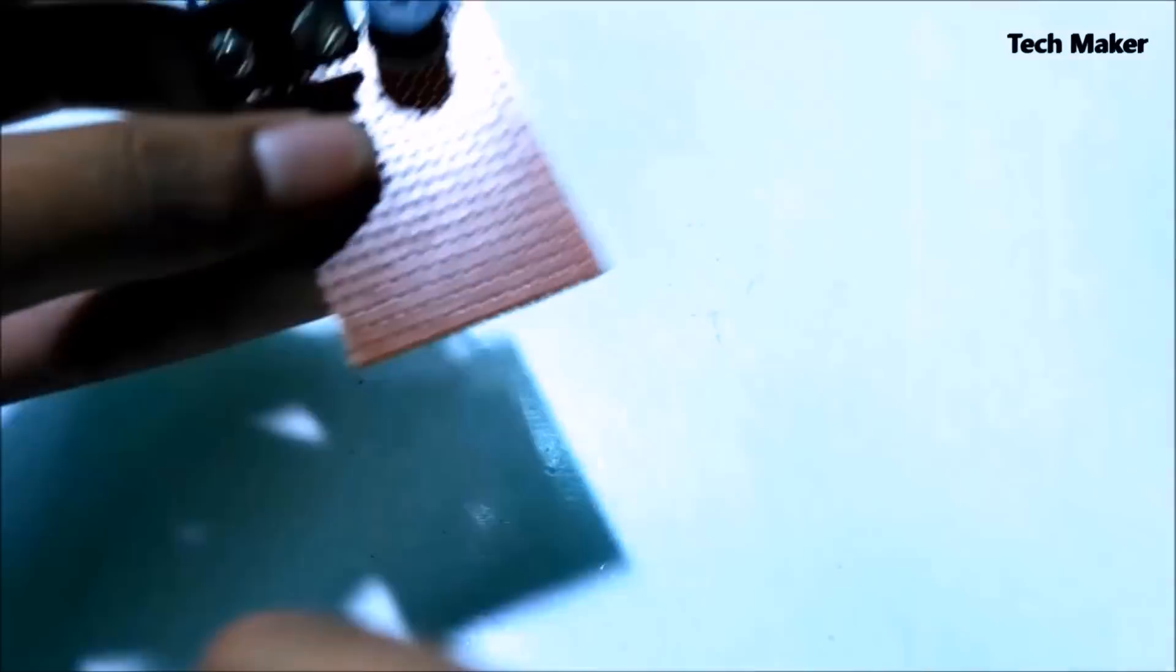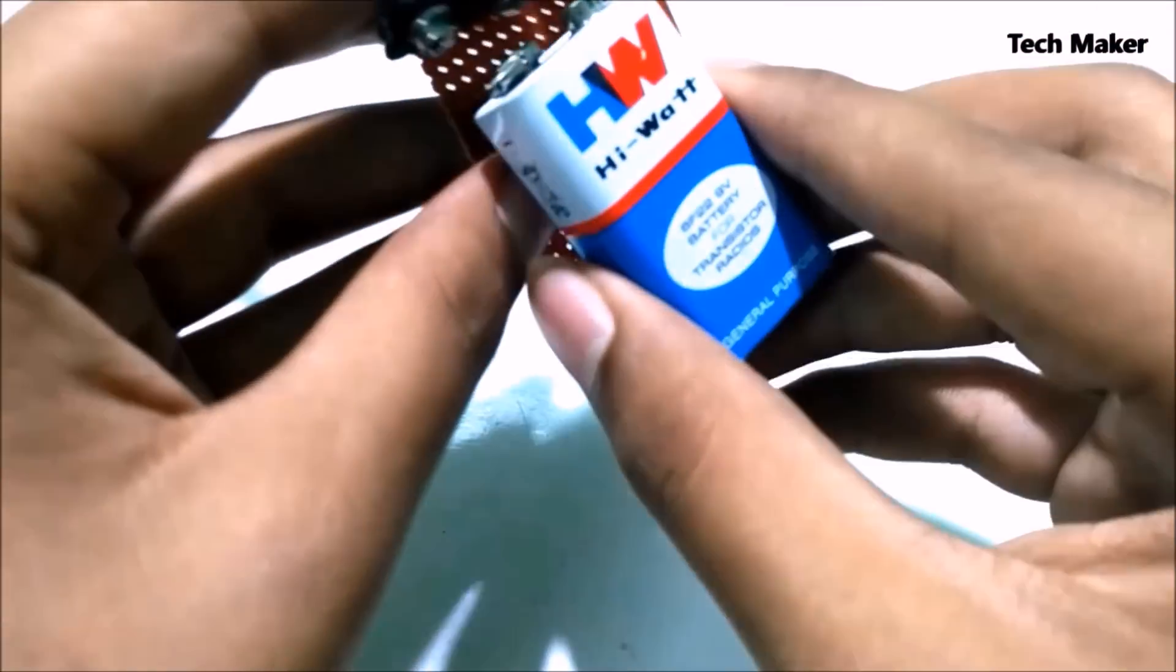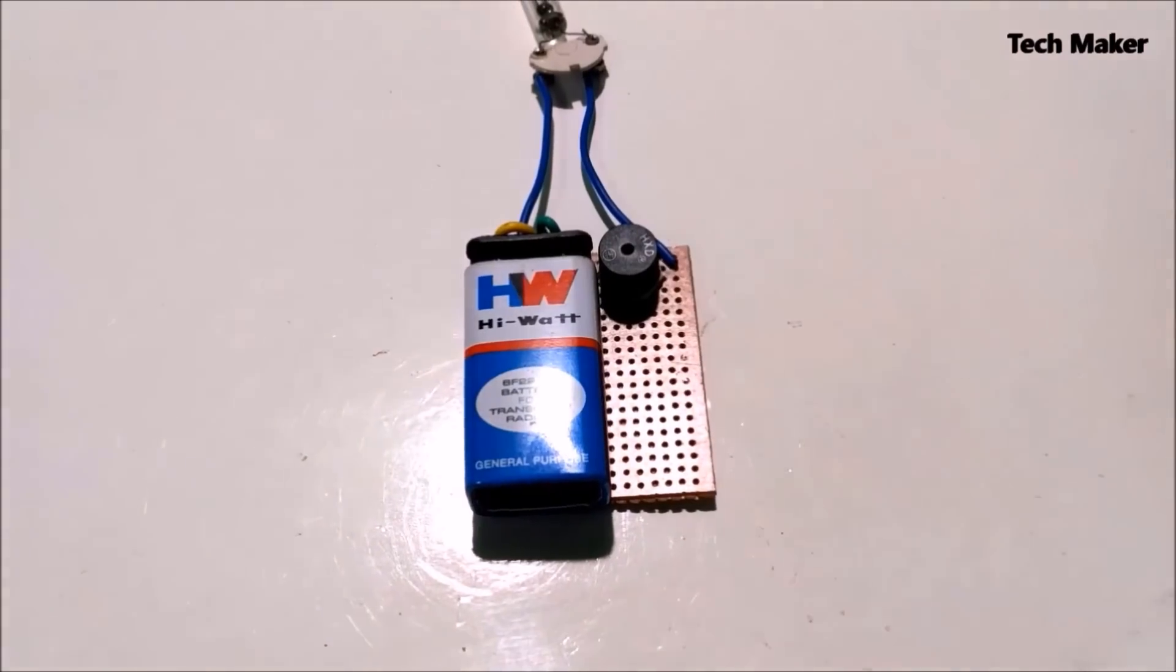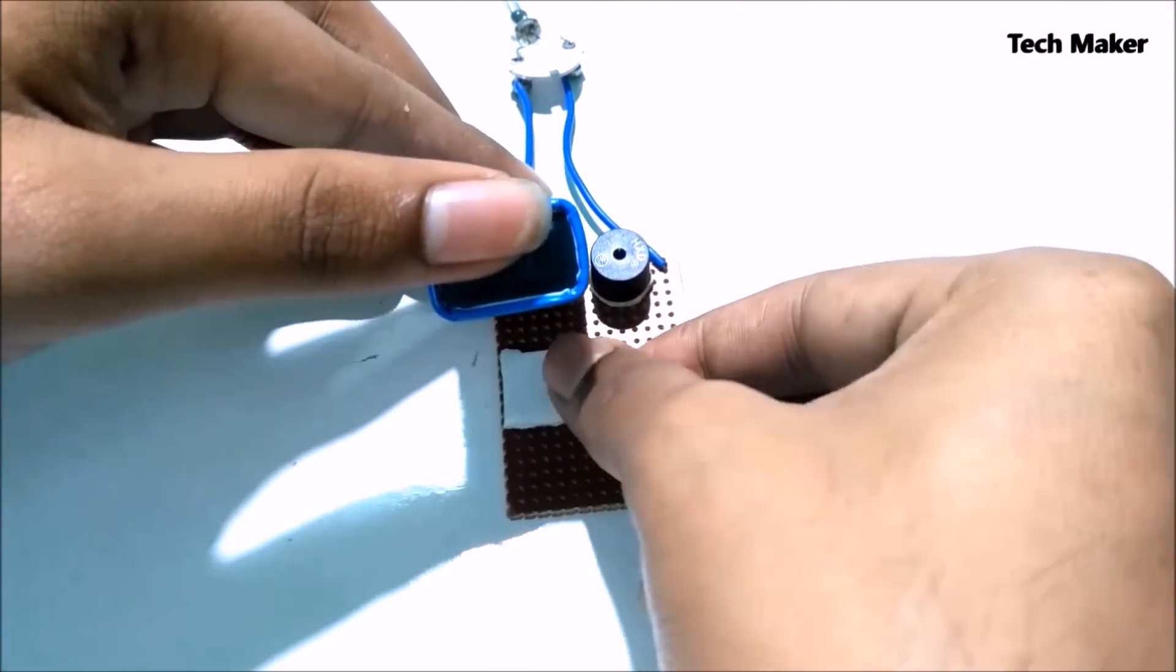Now connect battery to it. Add a piece of double-sided tape to stick the battery to the PCB.